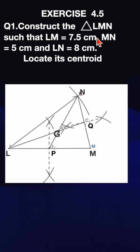Construct the triangle LMN such that LM is equal to 7.5 centimeters, MN is equal to 5 centimeters, and LN is equal to 8 centimeters. Locate its centroid.